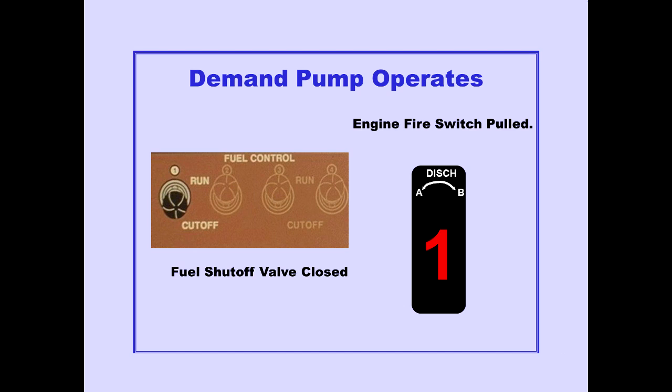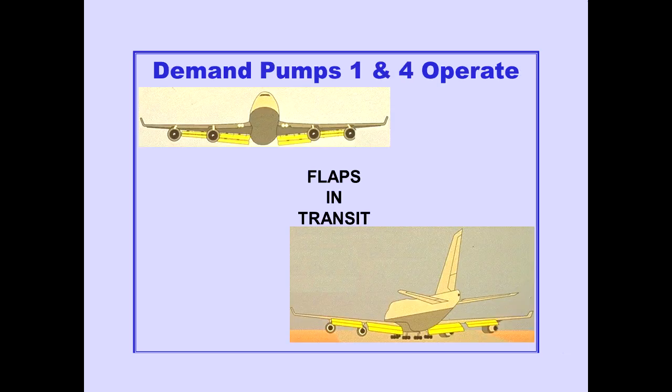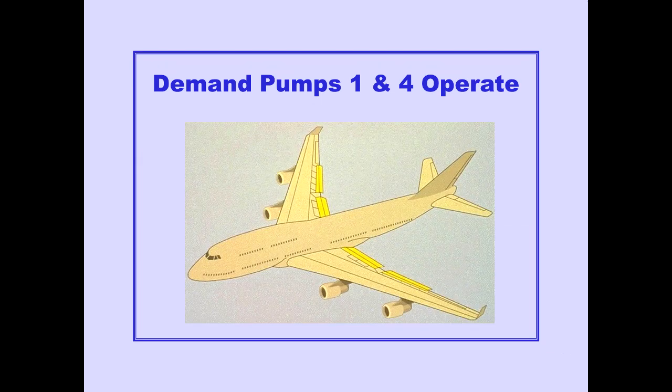A demand pump operates automatically when the fuel shutoff valve is closed by the fuel control switch in cutoff or the engine fire switch pulled. Demand pumps 1 and 4 will operate automatically when the trailing edge flaps are in transit, or any time flaps are out of the up position and the airplane is in flight.